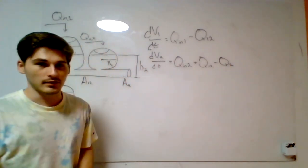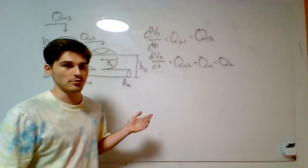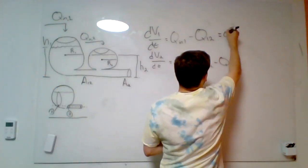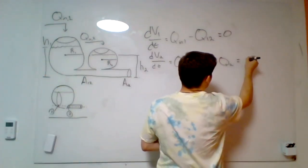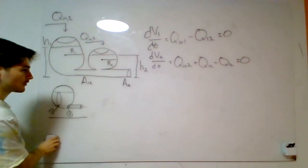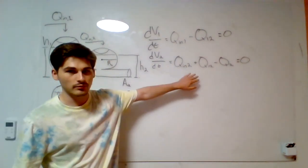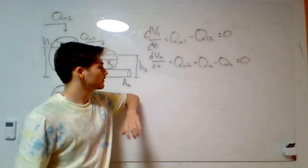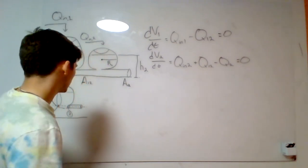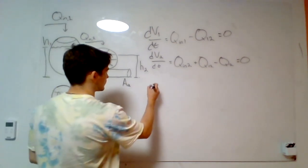In the initial steady state, the volumes aren't changing, so both dV/dt equations are equal to zero. We can solve for the flow rates Q12 and Q2_out by deriving Torricelli's law from the Bernoulli equation.